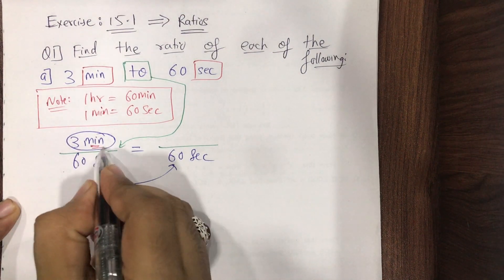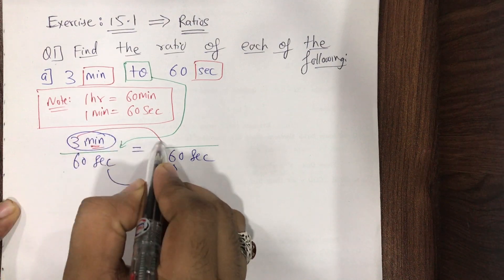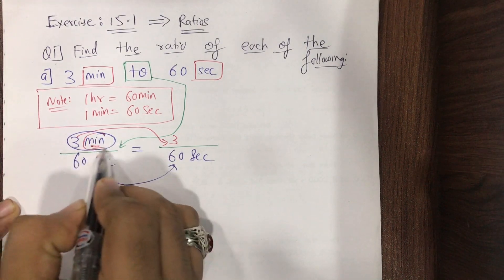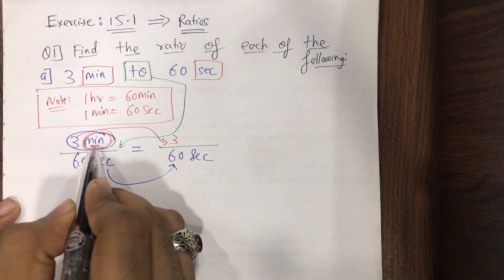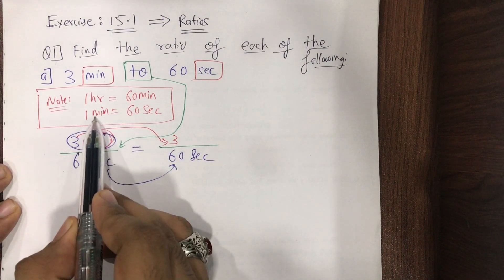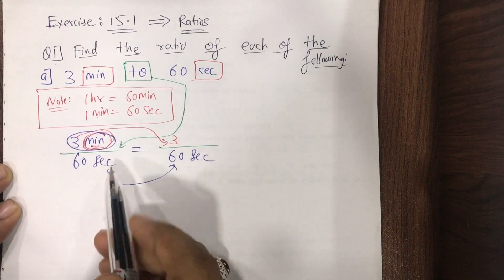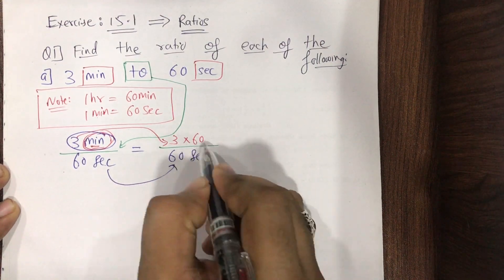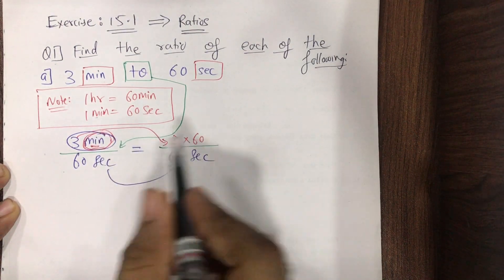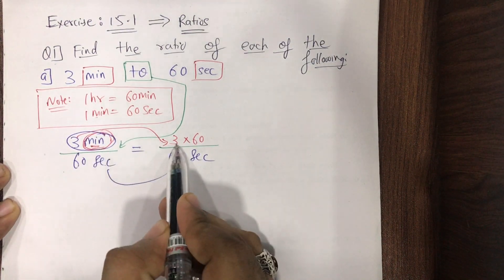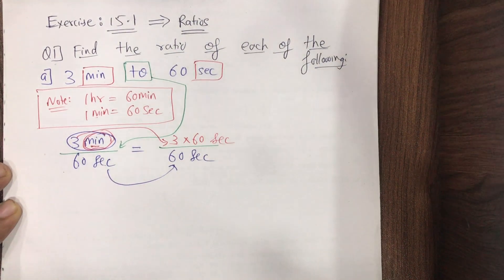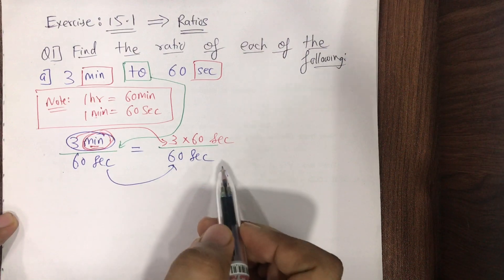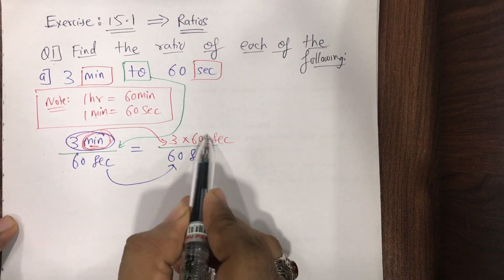Now: 3 minutes — I copy the 3 as it is. Since 1 minute equals 60 seconds, at the place of 'minutes' I write multiply by 60. So 3 minutes becomes 3 × 60 seconds. And now both units are seconds. In ratios, when we have the same quantities, the units get cancelled.